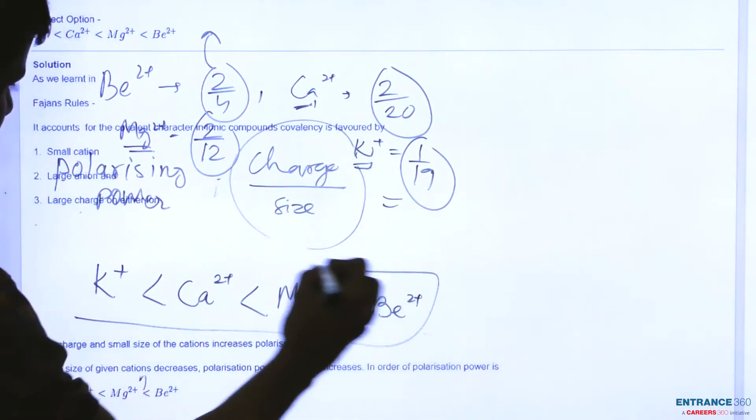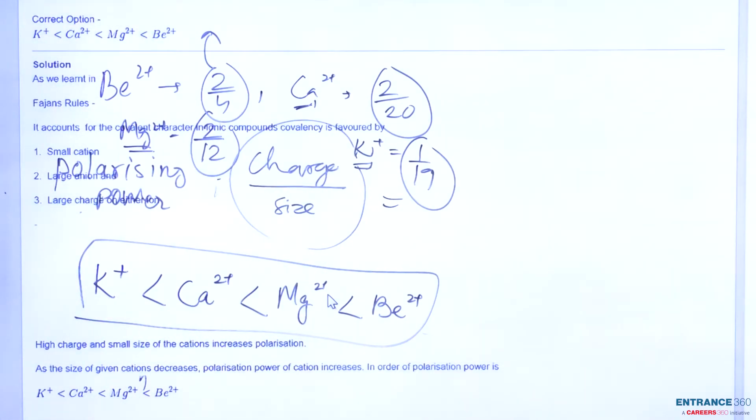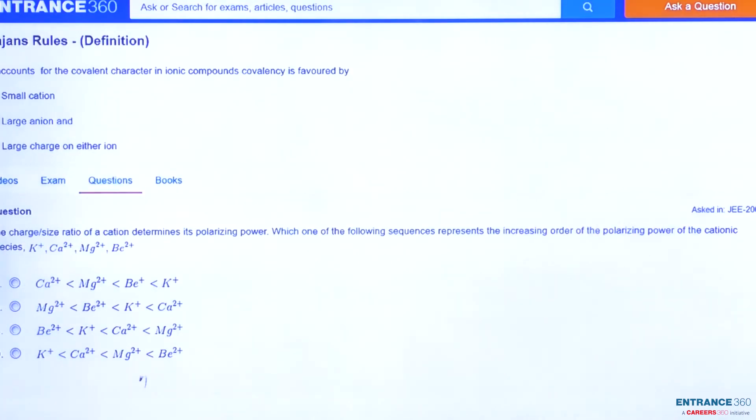So this will be the correct order where beryllium 2+ has the highest polarizing power. Now we will check for the correct options. From the given options we can say that D is our correct option.